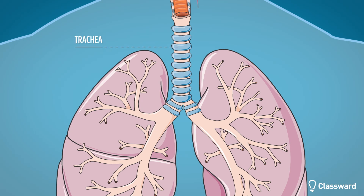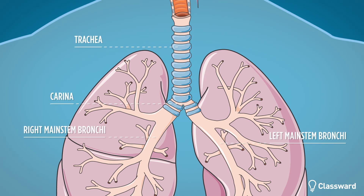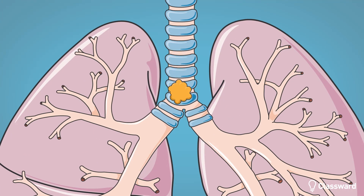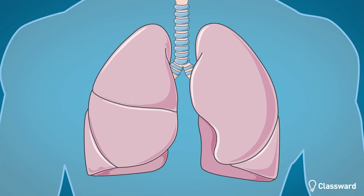The area where the trachea splits is known as the carina. You'll notice that the right main stem bronchi is wider and straighter than the left. When a small object or food inadvertently enters the airway, it's here in the right main stem bronchi where it will most likely become lodged.